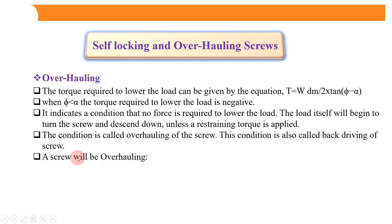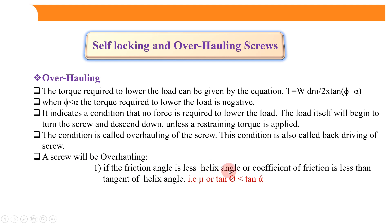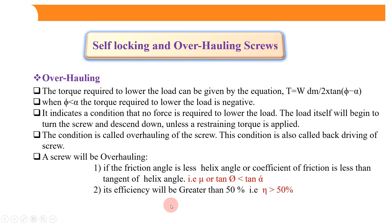A screw will be in overhauling condition under two conditions: first, if the friction angle is less than the helix angle, i.e., tan φ < tan α; and second, when the efficiency is greater than 50%. Overhauling is exactly opposite to self-locking. This is all about self-locking and overhauling.